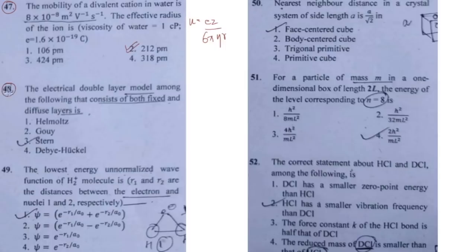Question 48 is about the electric double layer model. I have taught this topic in the plus classes. In the electric double layer you also have a Stern layer. The correct answer for this particular question is Stern. In the Stern model you have a static layer as well as a diffuse layer — two layers in total. So the answer is Stern for that particular question.